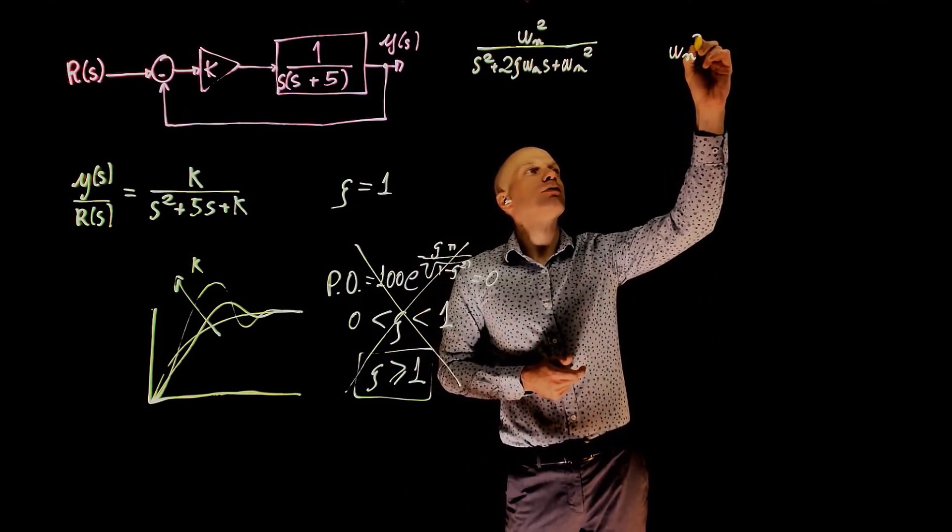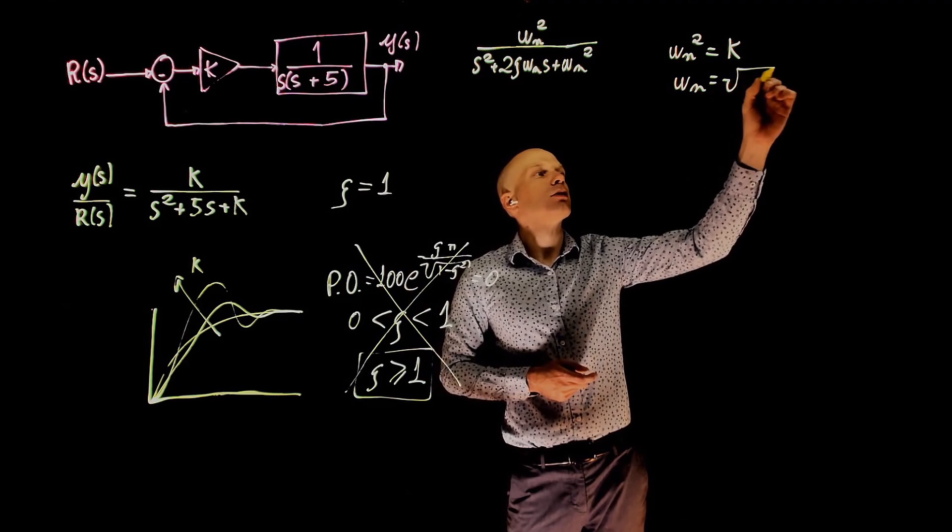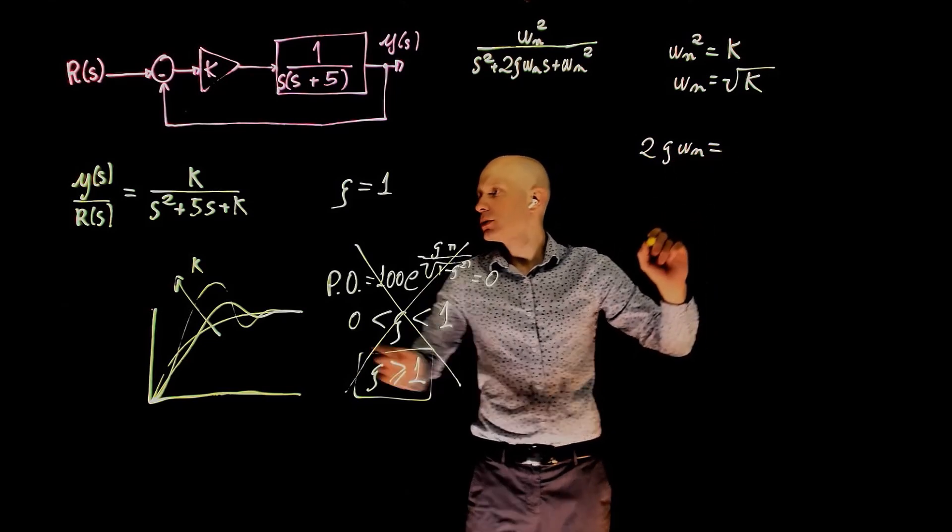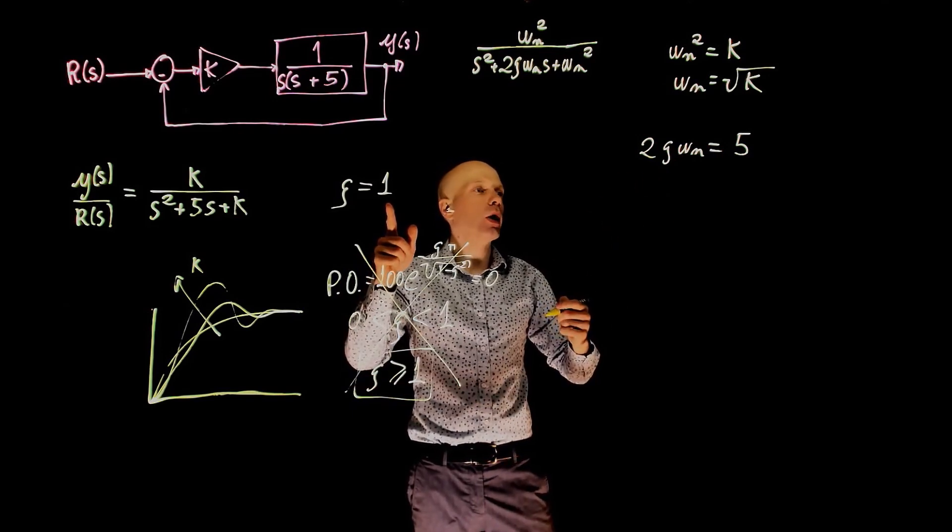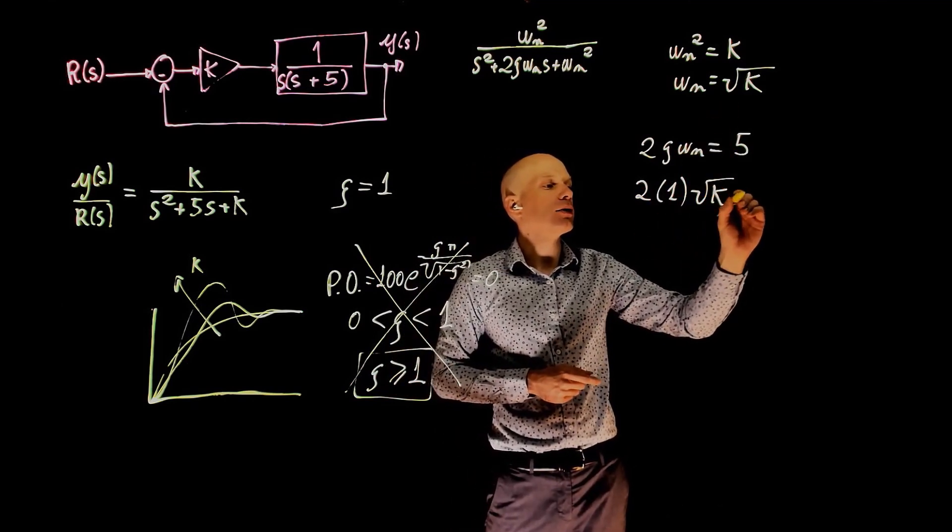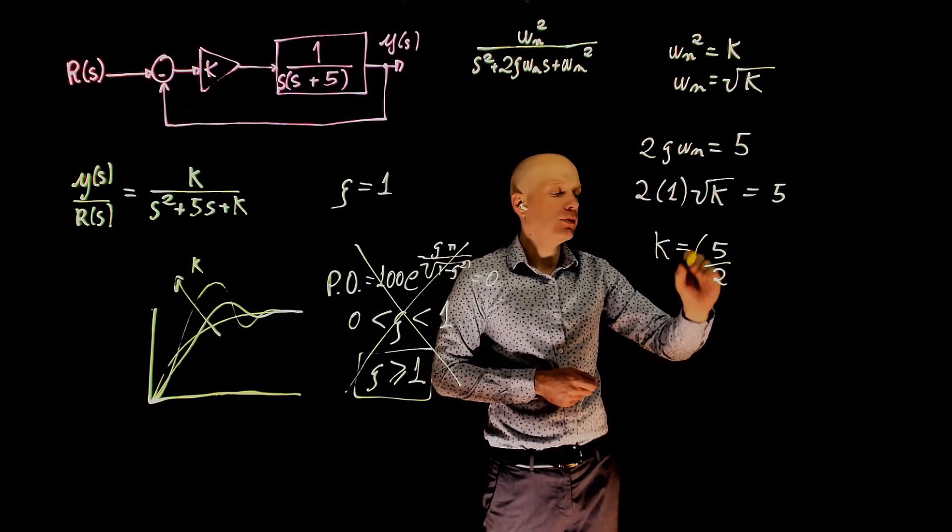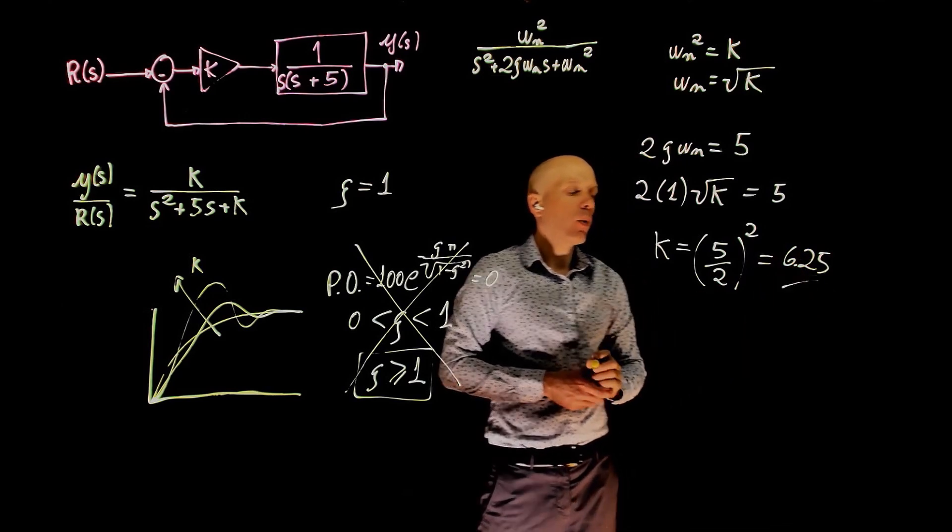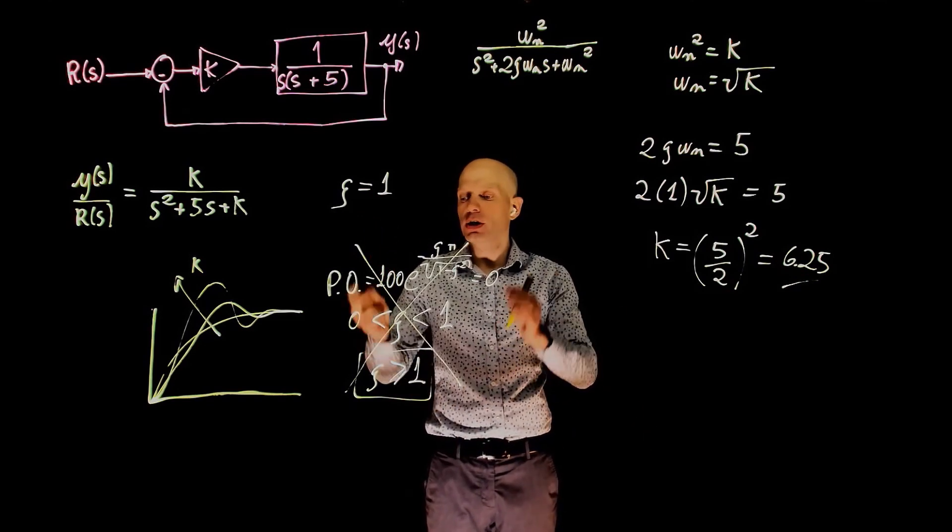So, omega n squared is equal to k. So, omega n is square root of k. 2 zeta omega n equals to 5. Zeta is what you want to set to 1. So, here we have 2 times 1 times omega n square root of k. This is equal to 5. k is equal to 5 over 2 squared. This is 6.25. When k is equal to 6.25, zeta is 1. The system is critically damped. The overshoot is 0.